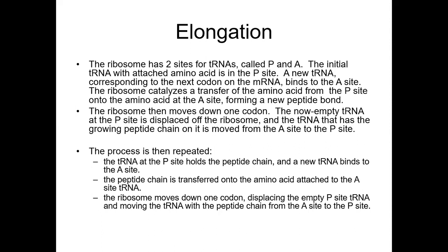The next step in elongation: ribosomes have two sites for transfer RNA called P and A. The initial transfer RNA with attached amino acid is in the P site, and the transfer RNA responding to the next codon on the mRNA goes to the A site.